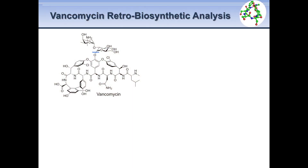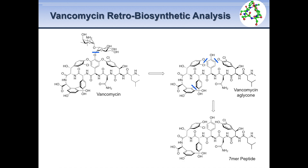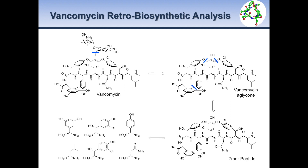When we conduct a retrobiosynthetic analysis of vancomycin, we see that removal of the disaccharide unit gives rise to the aglycone, and the cleavage of these three aryl crosslinks gives rise to a simple heptapeptide consisting of these amino acids. This suggests that in the forward direction we could use solid-phase peptide synthesis to generate the peptide, the three metalloenzymes to install the aryl crosslinks, and finally two glycosyl transferases to complete a chemoenzymatic preparation of vancomycin.